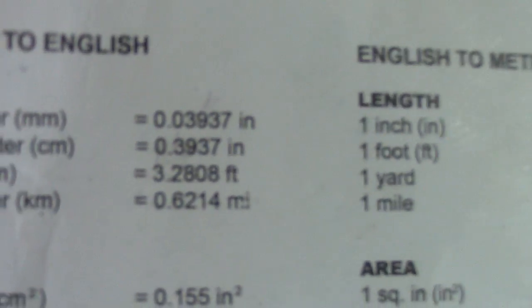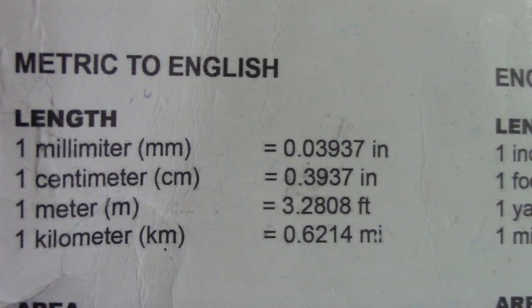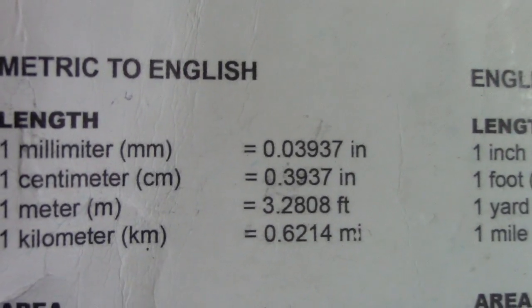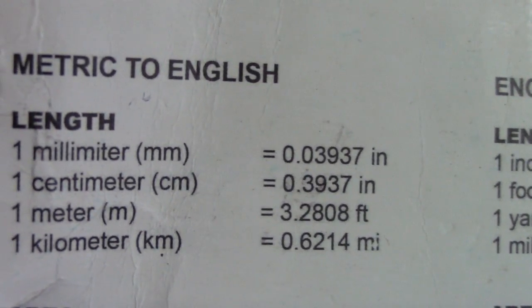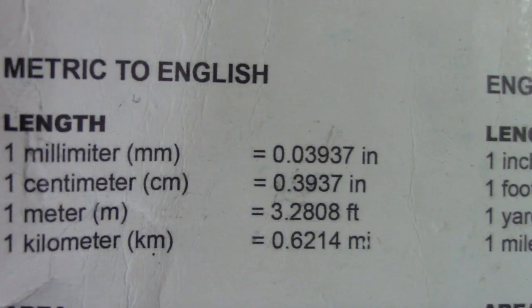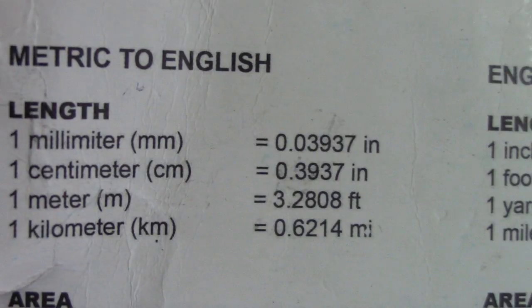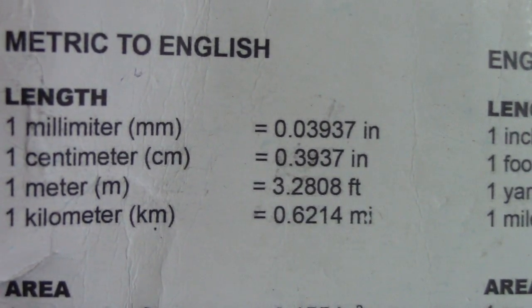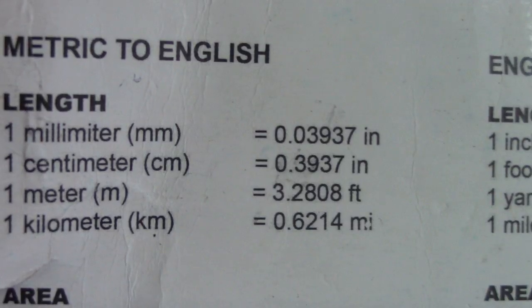Hi guys, welcome to Piping Welding and DD channel. This is a conversion table. We will start with metric to English length: one millimeter equals 0.03937 inches, one centimeter equals 0.3937 inches, one meter equals 3.2808 feet, and one kilometer equals 1.6214 miles.